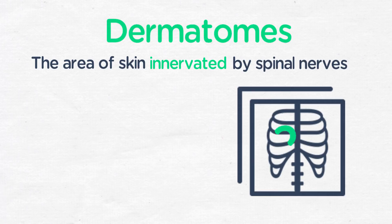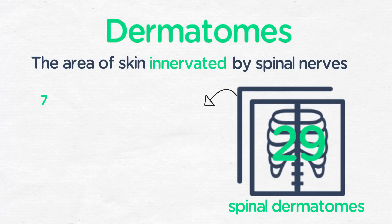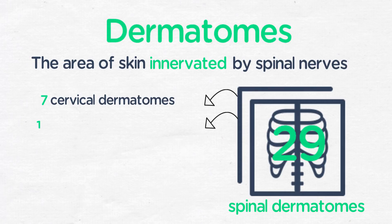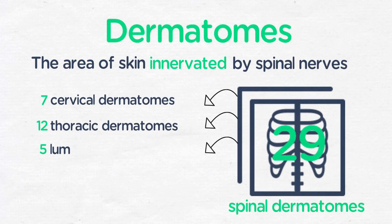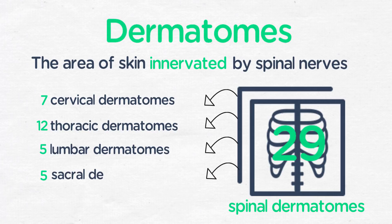There are a total of 29 spinal dermatomes: seven cervical dermatomes, 12 thoracic dermatomes, five lumbar dermatomes, and five sacral dermatomes.